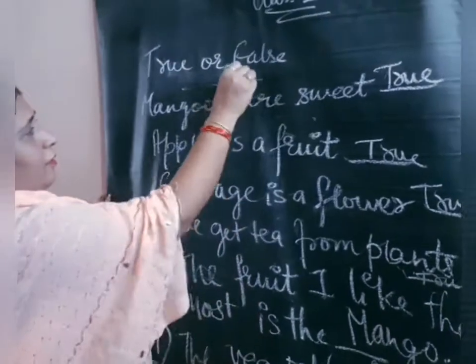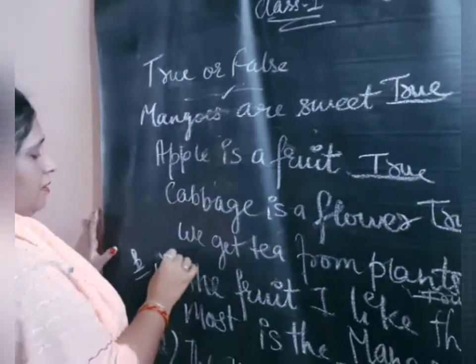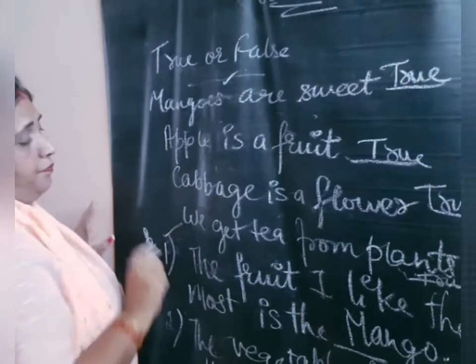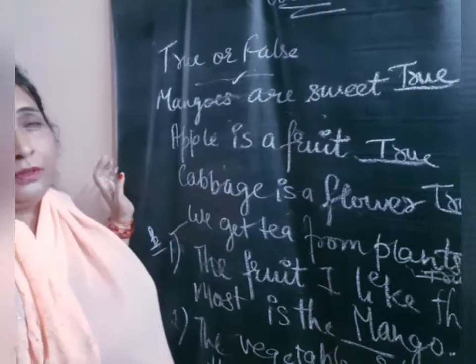Now True or False is done and Section B is done. Thank you.